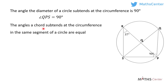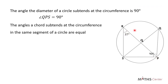The angles a chord sustains at the circumference in the same segment of a circle are equal. When we look at our diagram, we can see that the chord SP sustains an angle of 37 degrees at point R. And then in the same segment, the chord SP sustains this angle at point K. The theorem says that if the same chord sustains different angles in the same segment, those two angles are equal.